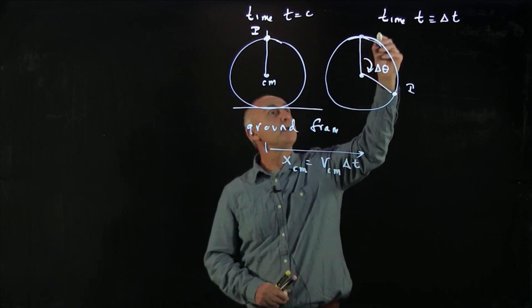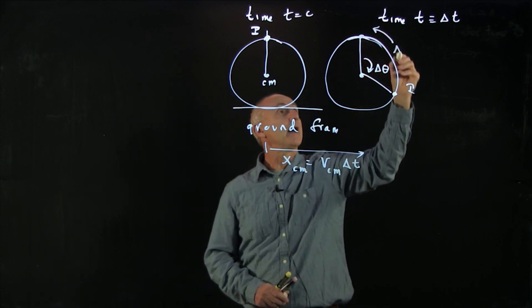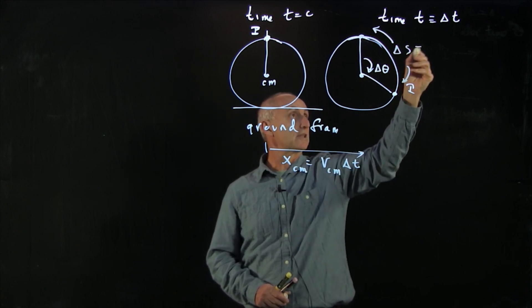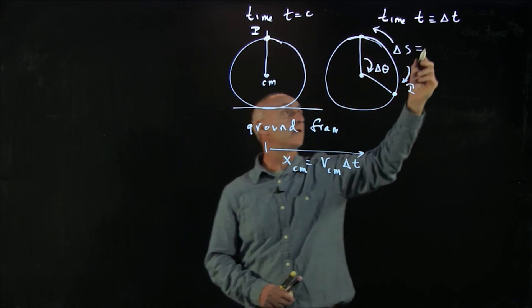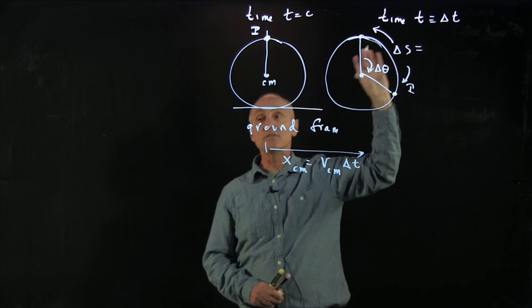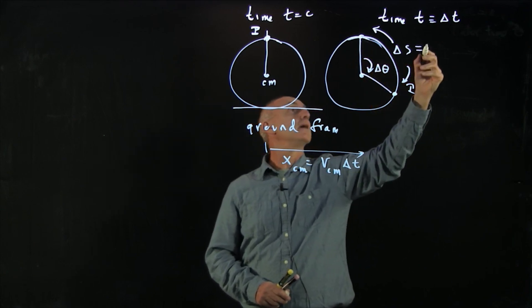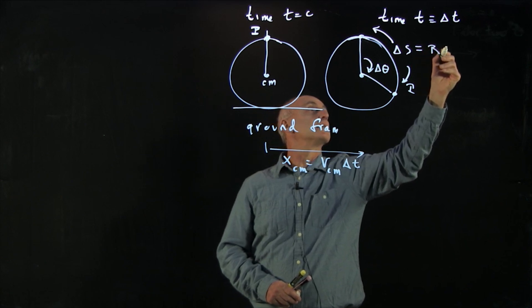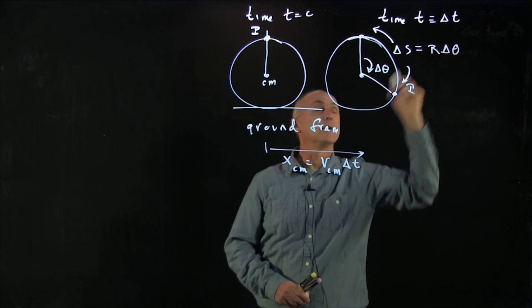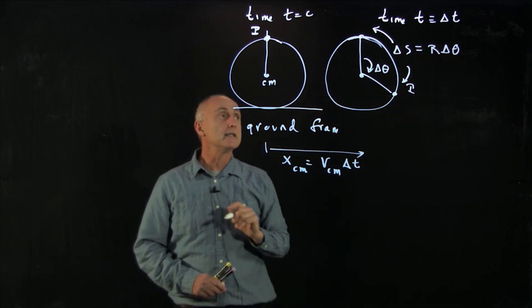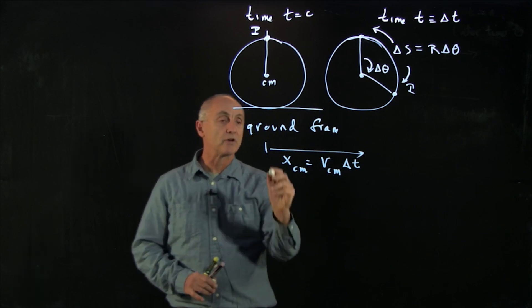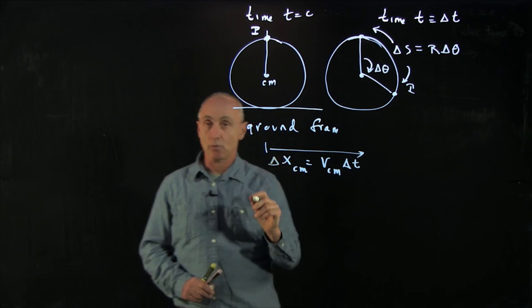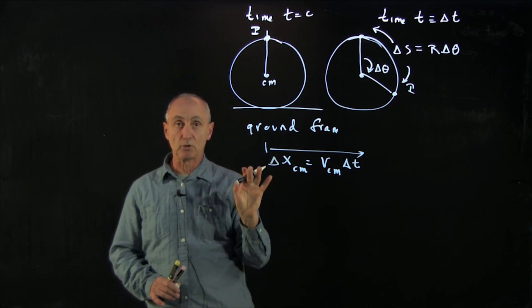And the point P on the rim, this arc length, this length here on the rim that P has moved around in the center of mass frame, is r delta theta. Now we want to ask ourselves, we'll call this delta x. We now have three possible conditions.